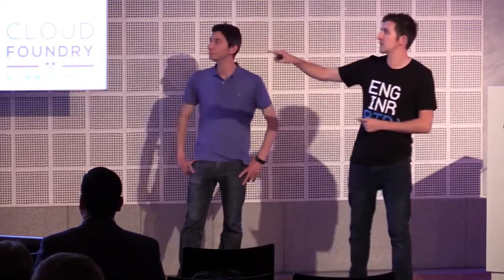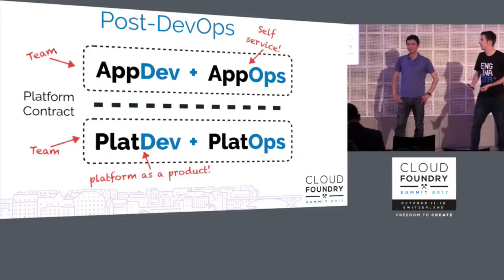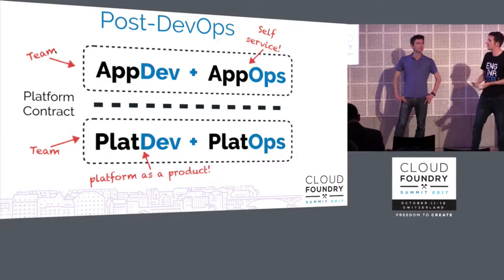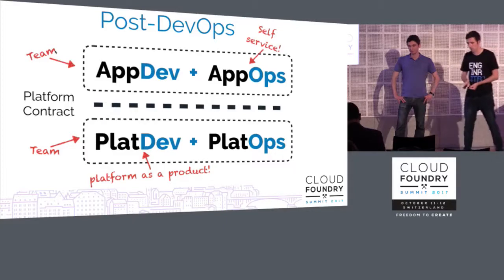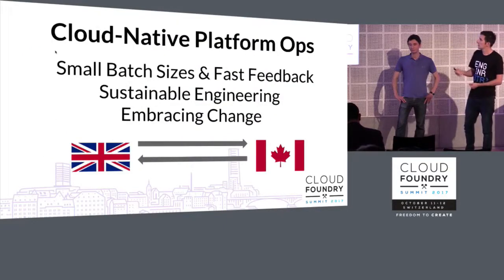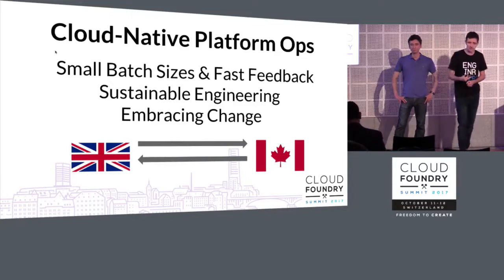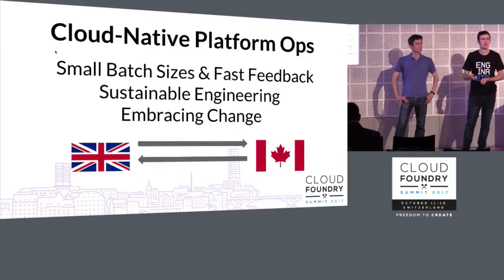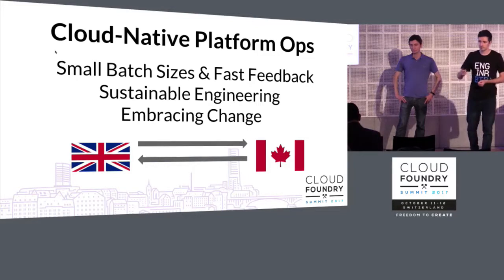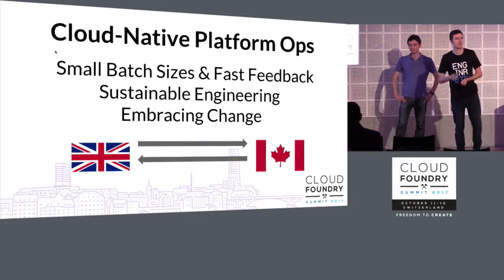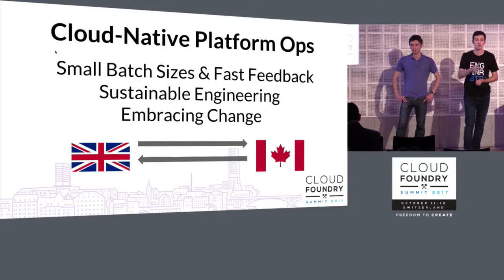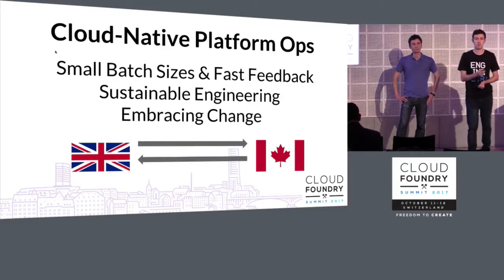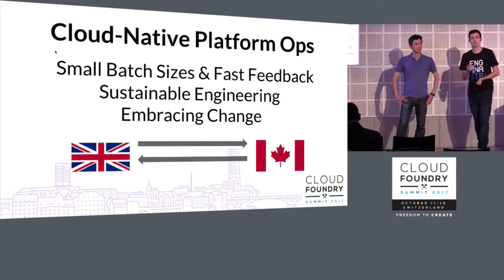What we're focusing on in this presentation is that bottom product team in the dotted line. We're encouraging Gemalto and the engineers we've been working with to think about how to form that team. The philosophy we have is all about small batch sizes and fast feedback — everything we do is trying to encourage a way of working that allows us to learn faster. The automation and the continuous deployment of the platform form a feedback loop so that you can learn very quickly about what you're doing.